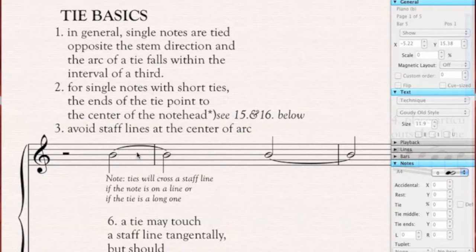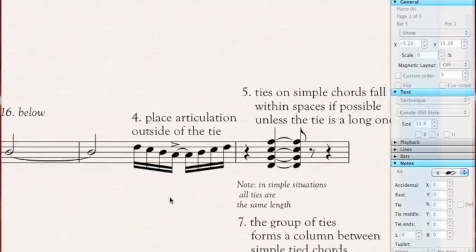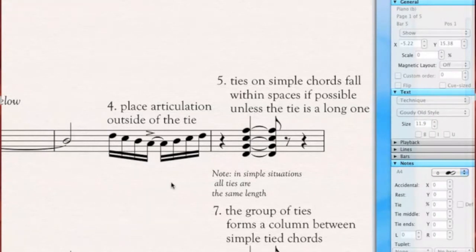A short tie, though, as we'll see later, will fall within a space, for example here. Place the articulation outside of the tie. Here the tie points from the center of the note to the center of the note it's tied to, and it falls within a space. It's a simple single note tie.